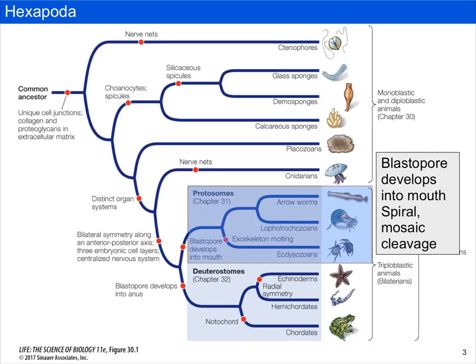Recall that if you look at metazoan phylogeny, we are still within the group called the protostomes, which means that they have a blastopore that develops into the mouth. Although we identify a feature of protostomes as spiral mosaic cleavage, hexapods are among the groups that don't do spiral mosaic cleavage — they do their own thing, and we're not really going to talk about it in BIS2C.